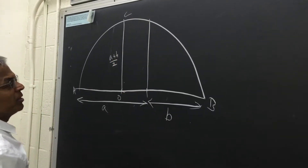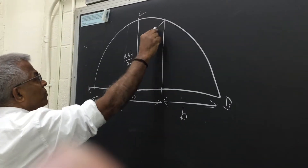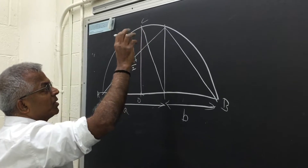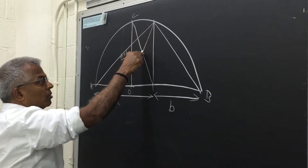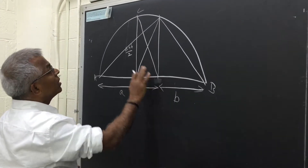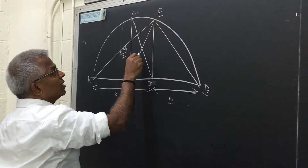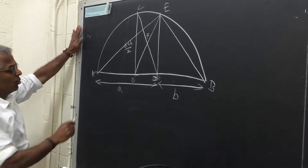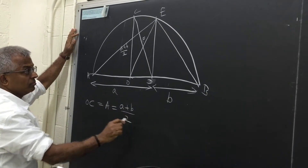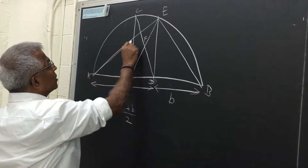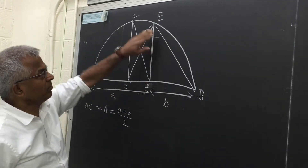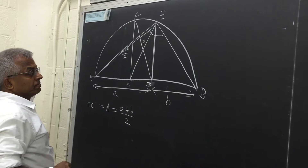Draw a perpendicular from the point dividing the diameter into lengths a and b, and look at the resulting triangles. Label the points A, B, C, D, E, F. Every line segment has a geometric interpretation. OC is of course the arithmetic mean, (a + b)/2. The angle at the circumference is 90 degrees because it is a triangle inscribed in a semicircle (angle in a semicircle theorem).